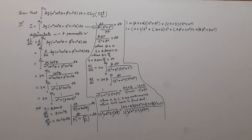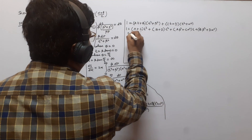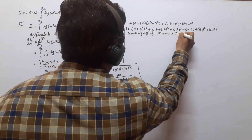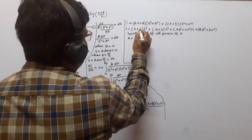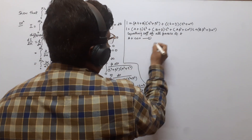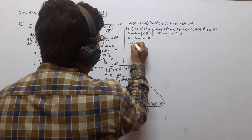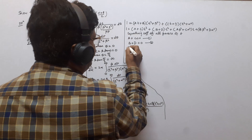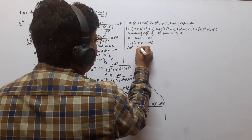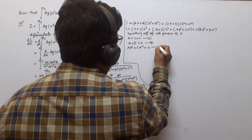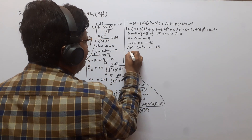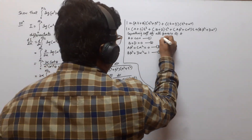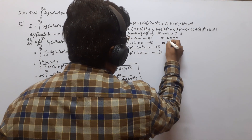Equating coefficients of all powers of t: the coefficient of t³ gives A + C = 0 (first equation); the coefficient of t² gives B + D = 0 (second equation); the coefficient of t gives Aβ² + Cα² = 0 (third equation); and the constant term gives Bβ² + Dα² = 1 (fourth equation).